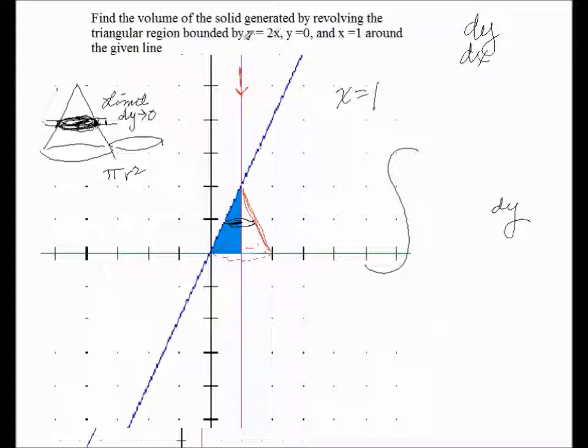Now the only thing we have to work with here is this y equals 2x and this y boundary of zero and x equals 1 boundary. We can see that the integral is going to go from y of zero up to y of 2, and then this area is going to be pi r squared.